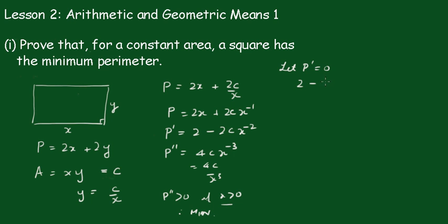And we get 2 minus 2c on x squared is equal to 0. 2c on x squared equals 2. So x squared is equal to c, which gives me that x equals the square root of c.